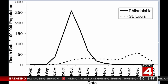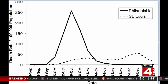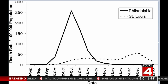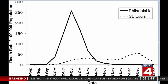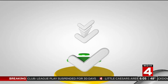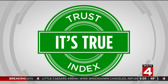St. Louis, on the other hand — the dashed line — identified their first case on October 5th but quickly instituted social distancing two days later on October 7th. As you can see, although cases did continue to occur, the influx was gradual, which gave doctors and hospitals time to properly care for patients and react.